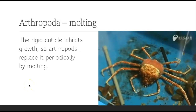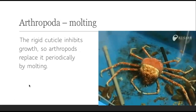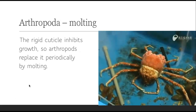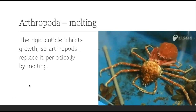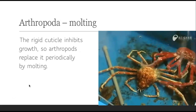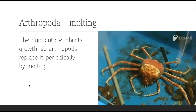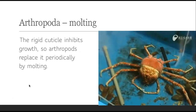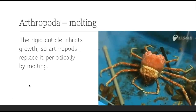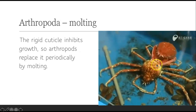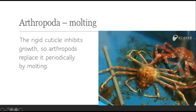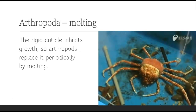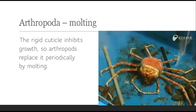Here's an interesting thing that arthropods do — it's called molting. That rigid cuticle that they are covered by: they outgrow it, and so once that happens, they have to shed it, or molt it. They get rid of the outer covering — they've already grown a new one. You can see this crab here basically leaving part of his exoskeleton behind. It's pretty gross looking, but all arthropods molt.